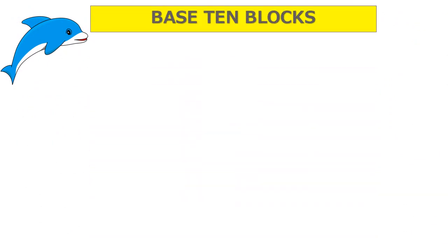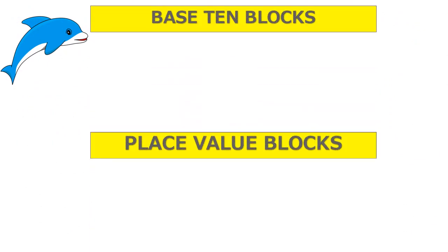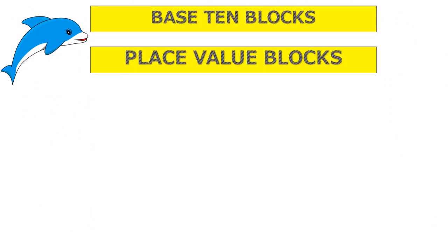Base 10 blocks, commonly known as place value blocks. These are a set of four different types of blocks that when used together can help you to see what a number looks like and understand its value. Let's take a look at our base 10 blocks.